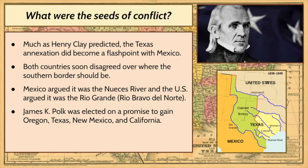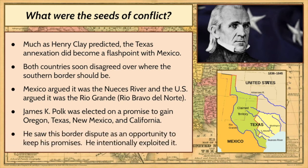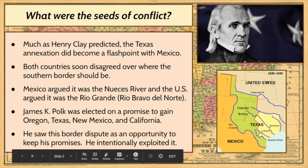James K. Polk was elected on a promise to gain Oregon, Texas, New Mexico, and California. He basically used aggressive stances towards gaining land as the basis on which he was elected, following very much in the footsteps of Andrew Jackson. He saw this border dispute as an opportunity to keep his promises, and he intentionally exploited this border dispute with Mexico to get what he wanted.